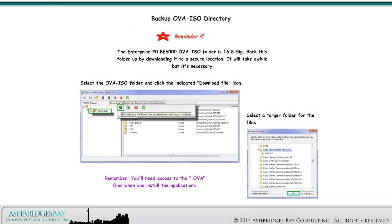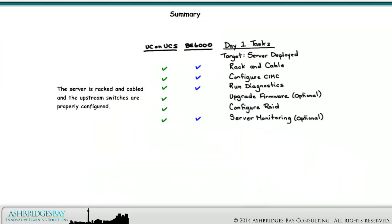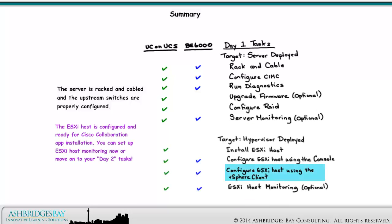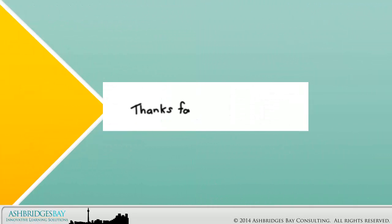Don't forget to backup the OVA ISO folder. The server is racked and cabled and the upstream switches are properly configured. The ESXi host is configured and ready for Cisco collaboration app installation. You can set up ESXi host monitoring now or move on to your Day 2 tasks. Thanks for watching.